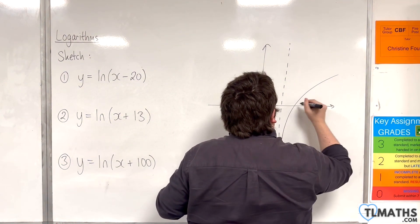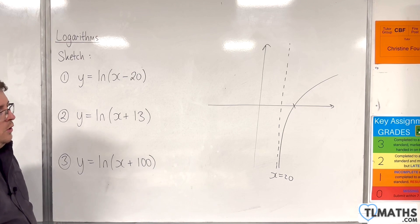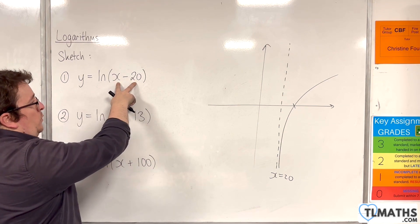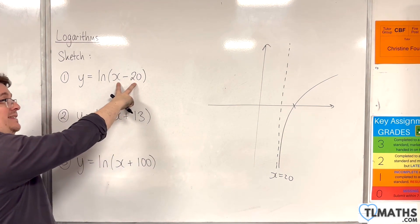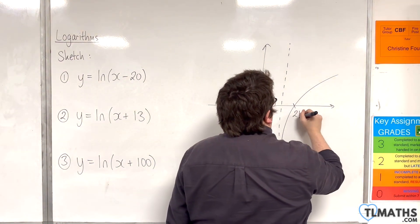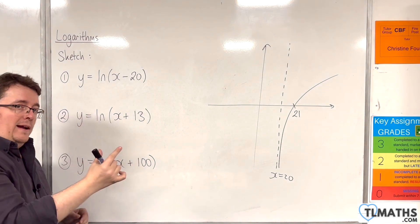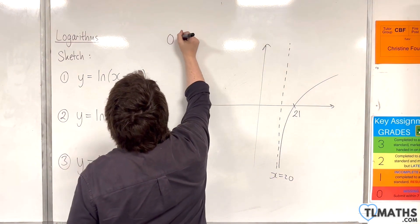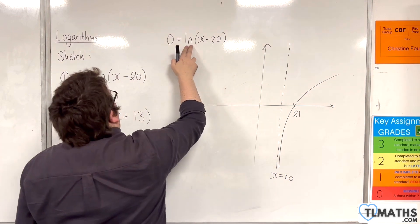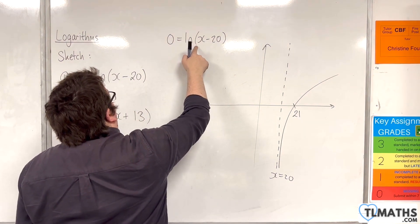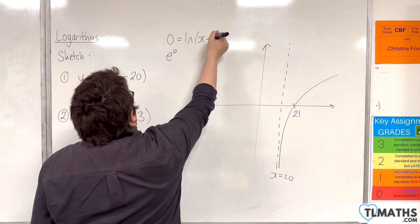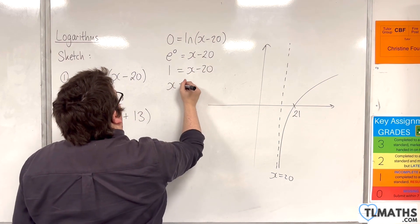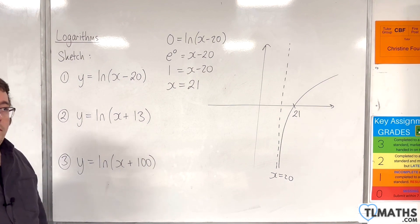Then you're going to have your traditional log curve. Where it crosses the x-axis is when y is 0. y is 0 when this bracket is equal to 1, and so that would be when x is equal to 21. You can either look at when the bracket is equal to 1, or you can put y equal to 0. Remember, that is log base e, so going from logarithmic to exponential form: e to the 0 is equal to x take away 20. e to the 0 is 1, then add 20 to both sides, and so you get x is equal to 21. Either way is fine.